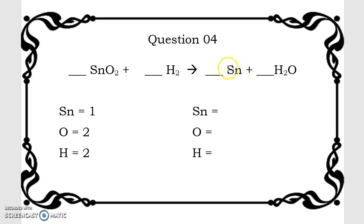Sn on the right, we have 1 atom because there's no subscript here. Oxygen, we have 1 because it's H2O. There's no subscript next to oxygen. And H2, we have 2 atoms on H2O.